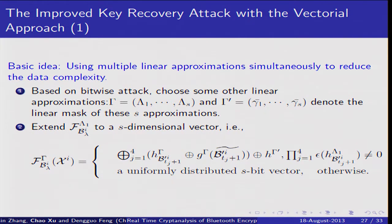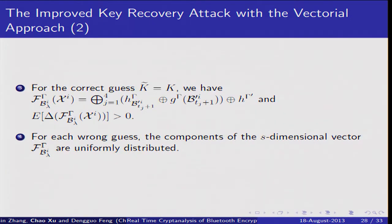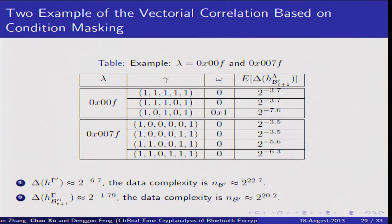The basic idea of the extended approach is to use multiple linear approximations simultaneously to reduce the data complexity. Based on the bitwise attack, we choose additional approximations and extend F to an estimation vector. For the right guess K, we have correlation bigger than zero. For the wrong guess, the components of the estimation vector F follow a uniform distribution. Two examples based on condition masking show that with the vector approach, the data complexity is lower than in the previous attack.